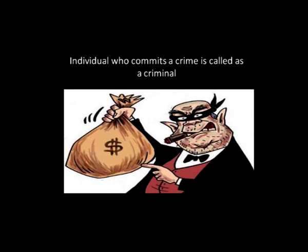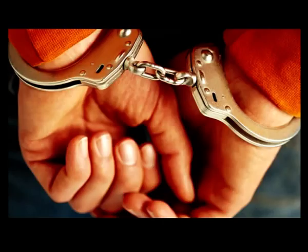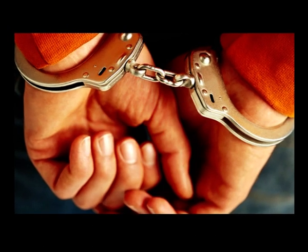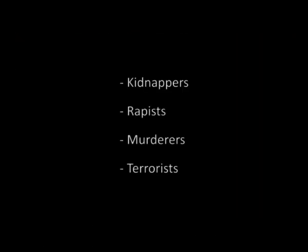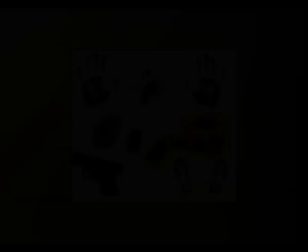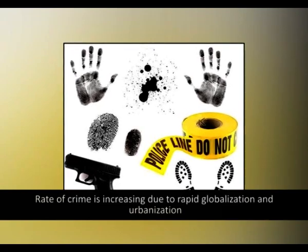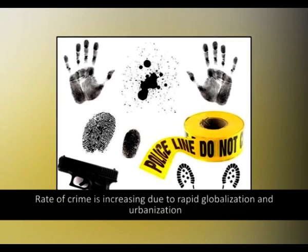Who are criminals? Any individual who commits a crime is called a criminal. In the current society we are most vulnerable to various criminals — they could be kidnappers, rapists, murderers, or even terrorists. There are also criminals who are indulged in crime under the influence of politicians and businessmen. The rate of crime is increasing day by day, mainly due to rapid globalization and urbanization. Scientific advancements serve as both a boon and a bane.